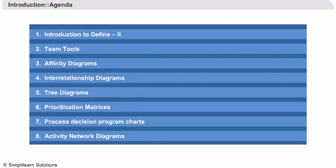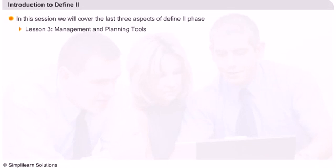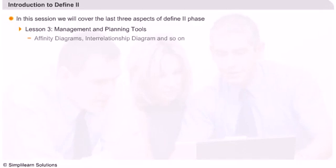In Lesson 3, we begin by introducing the Define Phase 2 and discuss various team tools and management and planning tools. We will look at the various management and planning tools which include affinity diagrams, interrelationship diagrams, and so on.